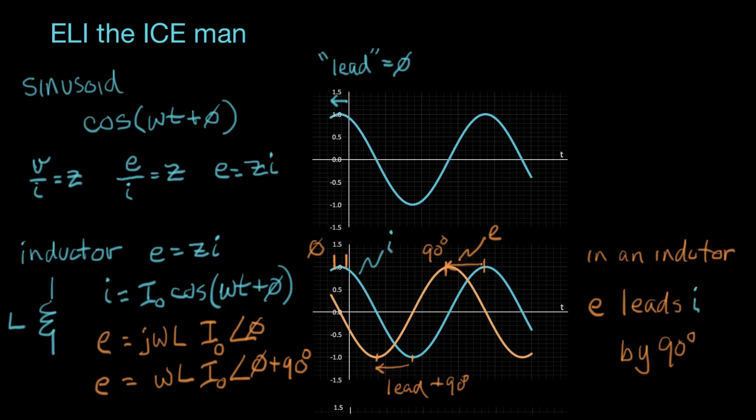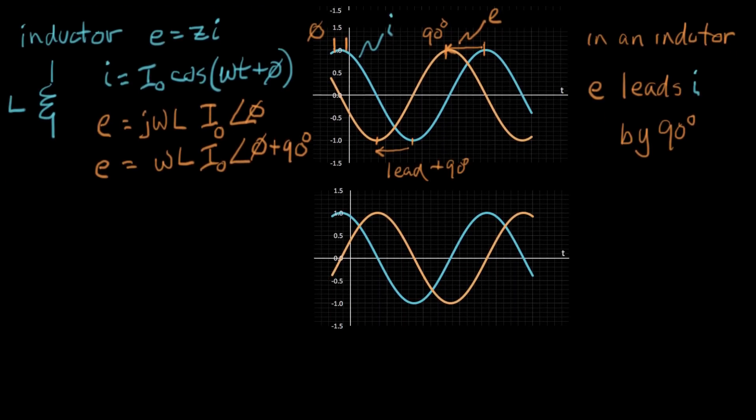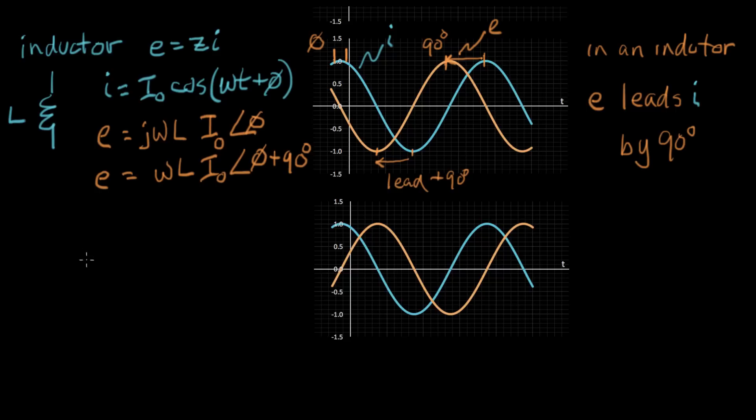All right. Now let's do it for a capacitor. And we'll do the same kind of thing here for a capacitor. We'll assign the same current. We'll say I equals some current I naught times cosine of omega T plus phi.